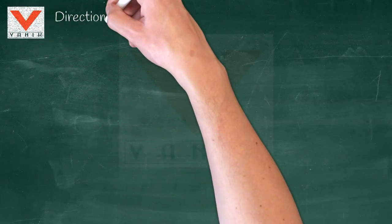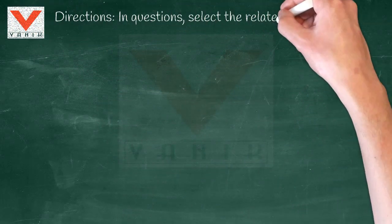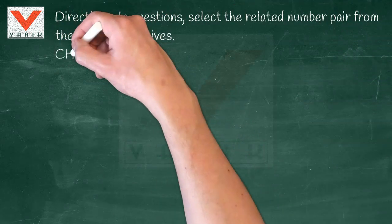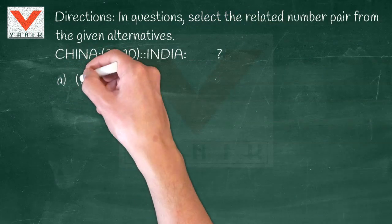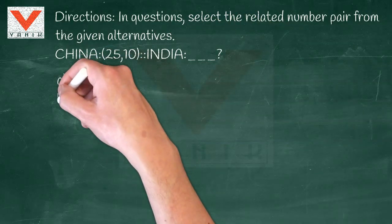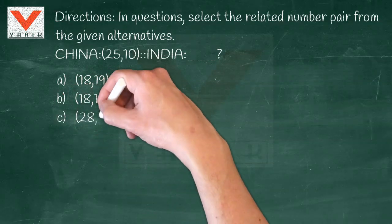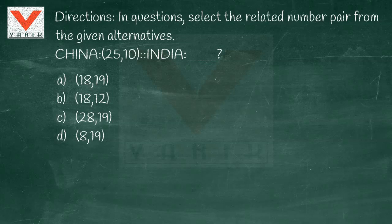Varnock reasoning tips: directions in questions — select the related number pair from the given alternatives. China: 25, 10. Then India dash. Options: A) 18, 19  B) 18, 12  C) 28, 19  D) 8, 19.